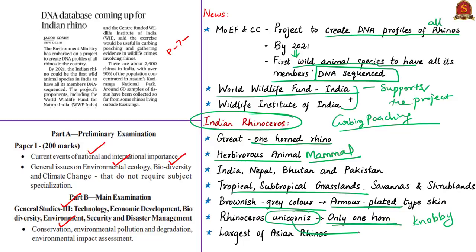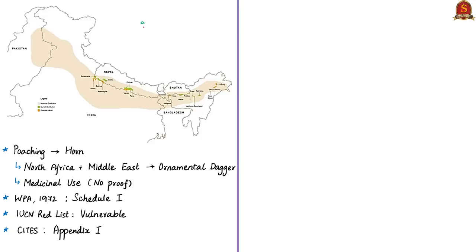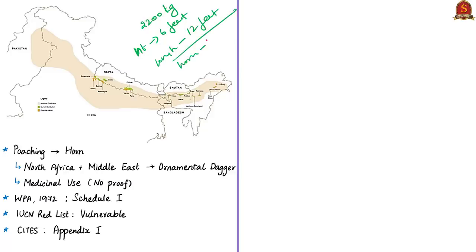The meaning of 'uni' is one, so Rhinoceros unicornis means one horn. It is the largest of the Asian rhinos. A male Indian rhino weighs approximately 2,200 kg, ranges in height from 170 to 186 cm (around 6 feet), and is 368 to 380 cm long (roughly 12 feet). Their horn can grow to around 18 inches or approximately 45 cm.